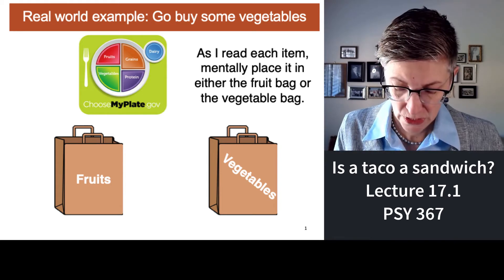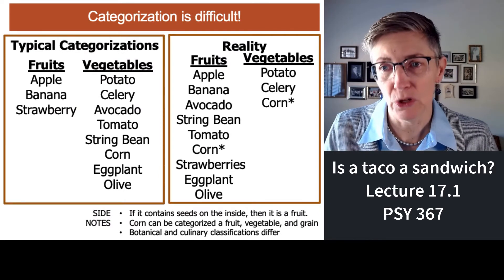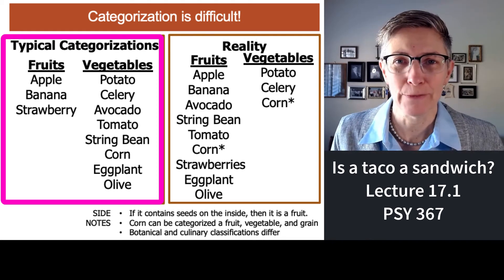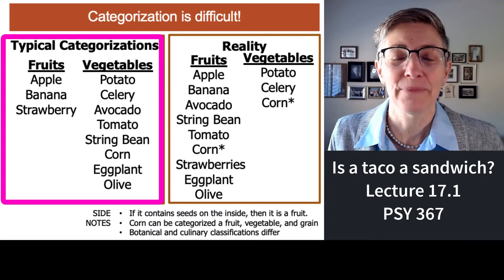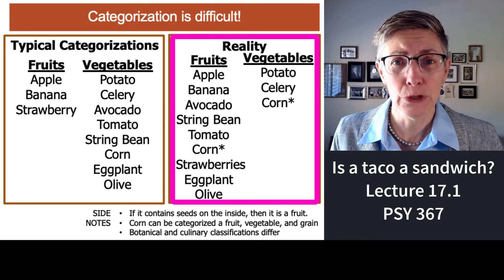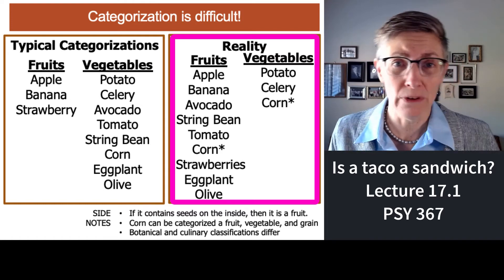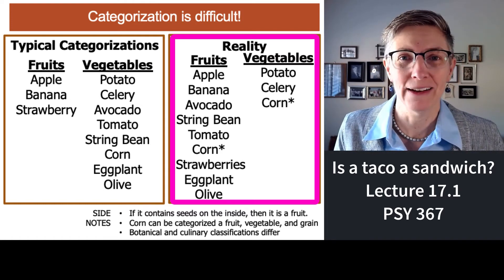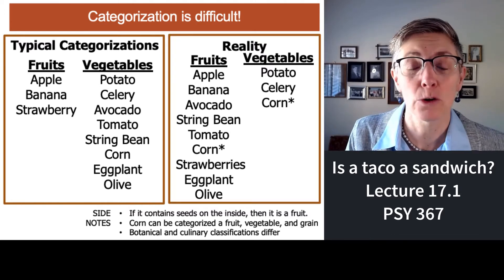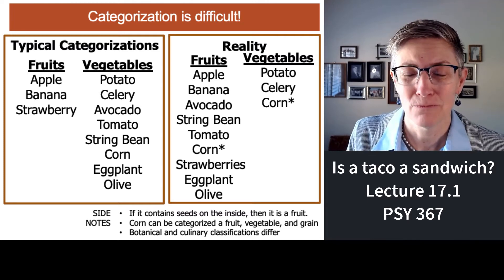Easy, right? If you ask most people to categorize those as either a fruit or a vegetable, most would say the fruits were apple, banana, and strawberry, and the rest are vegetables. But it turns out that's largely wrong. The reality is most of the items on that list were fruits. Some could be categorized as either fruits or vegetables, or both, depending on who you're talking to. What defines a fruit? If it has seeds on the inside, it's a fruit — usually.